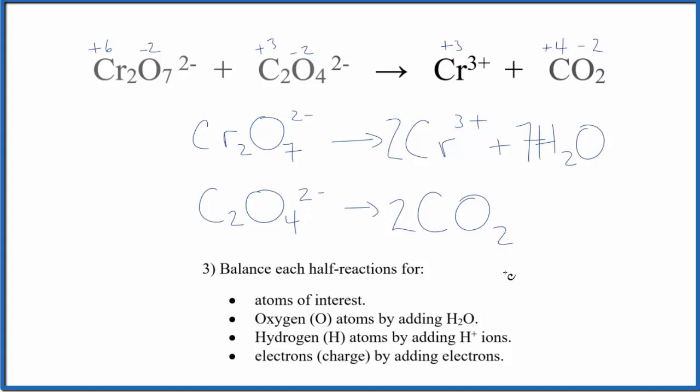Now we balance the hydrogens by adding hydrogen ions. Seven times two is 14, so we need 14 hydrogen ions here. Down here we don't have hydrogen, so we don't need to worry about it.